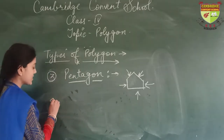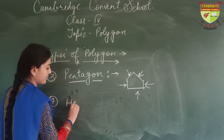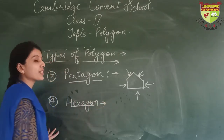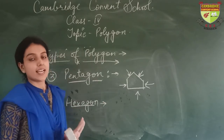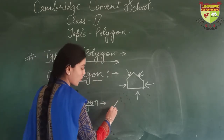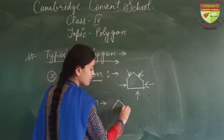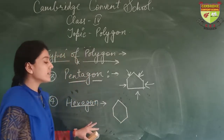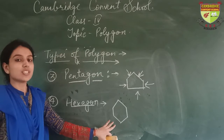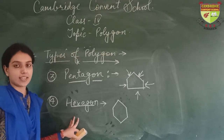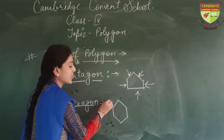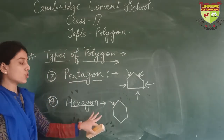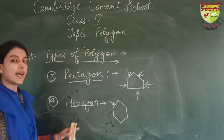Next one is hexagon. A figure which has 6 sides is known as a hexagon. Here the sides are 1, 2, 3, 4, 5, and 6. So this figure is known as hexagon. The polygon's name is according to their sides, and 6 sides is known as hexagon.